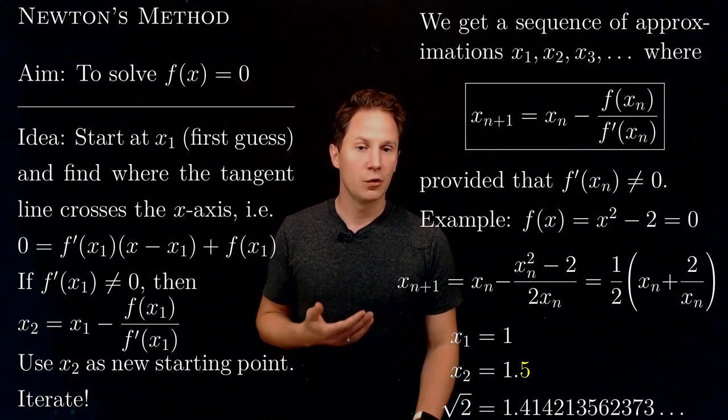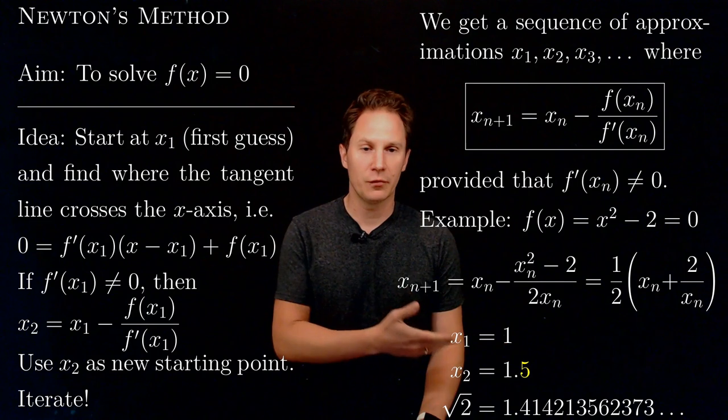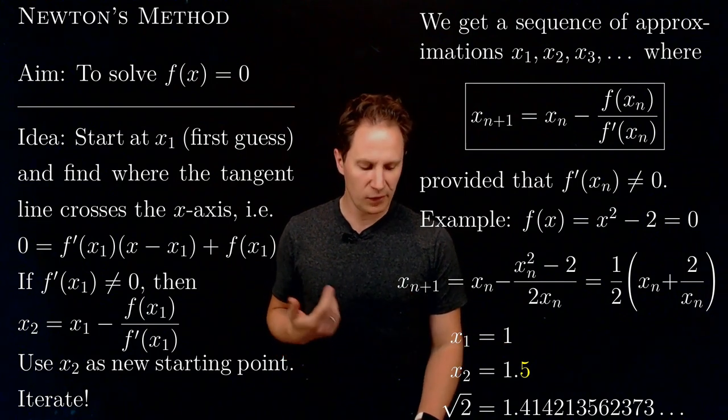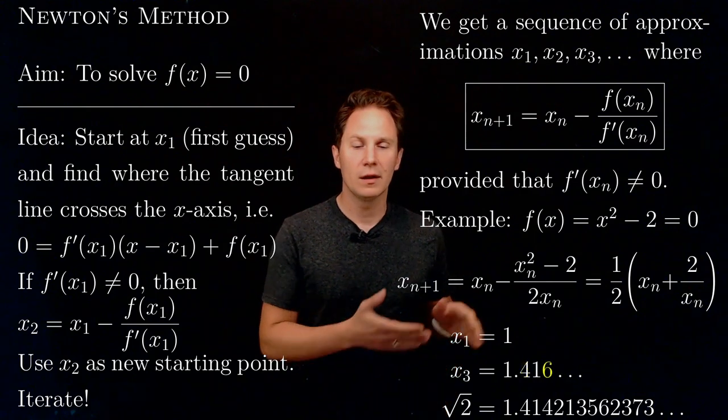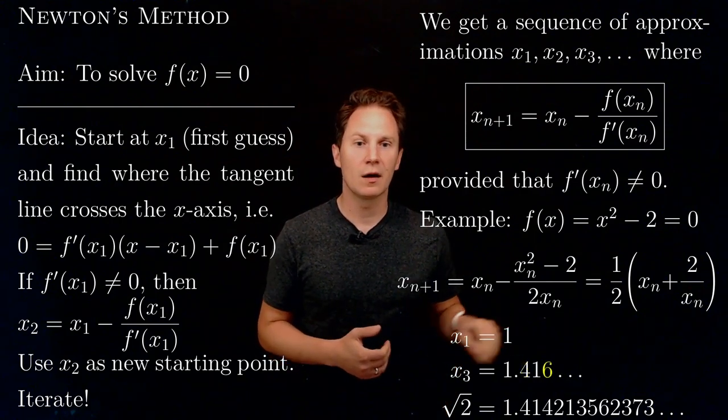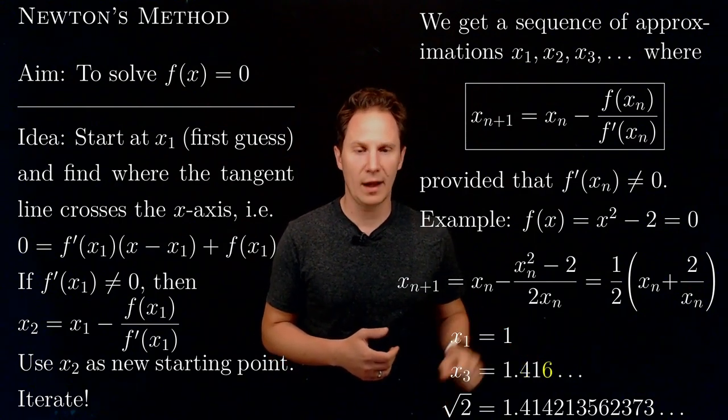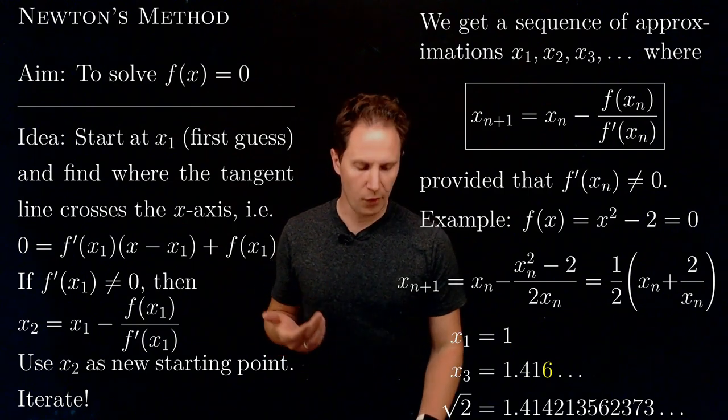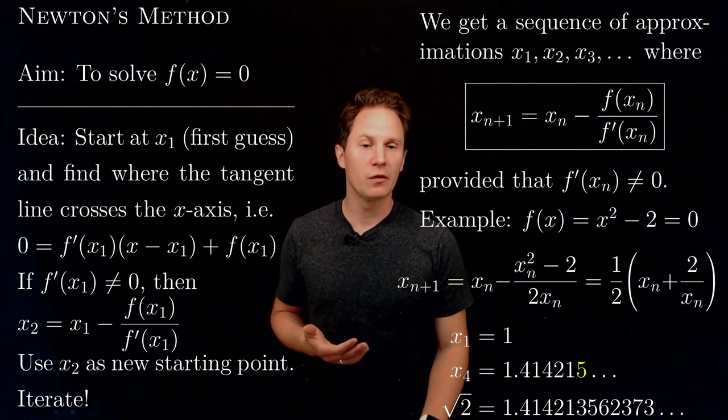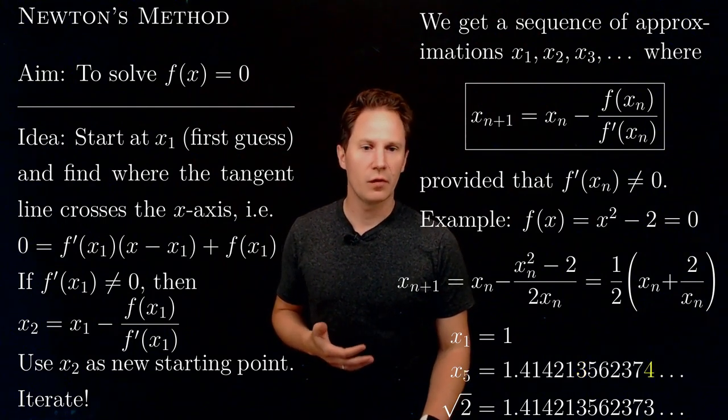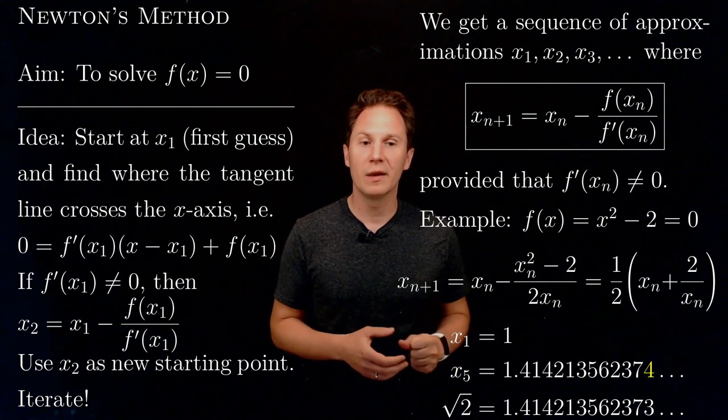What about x₃? Well, it works better. There we have two decimal places correct. What about x₄? Even more, now five decimal places correct. What about x₅? Even more decimal places correct.